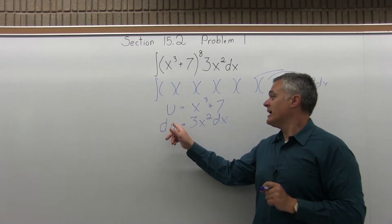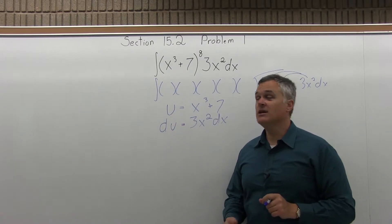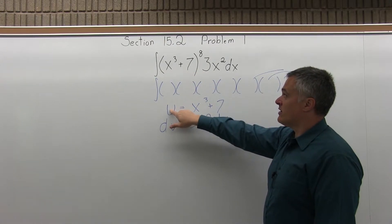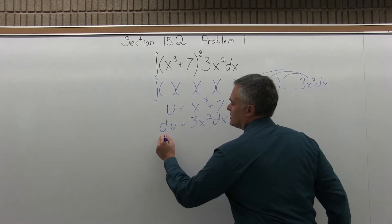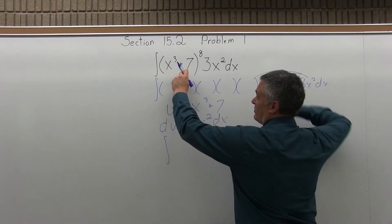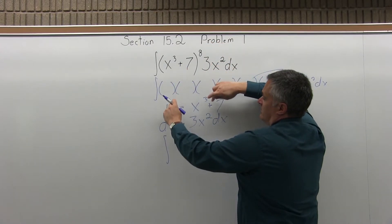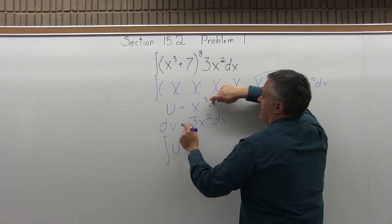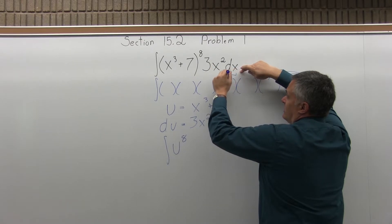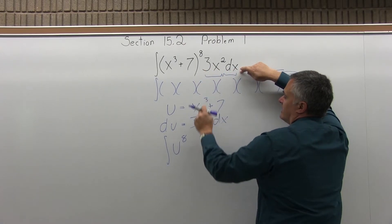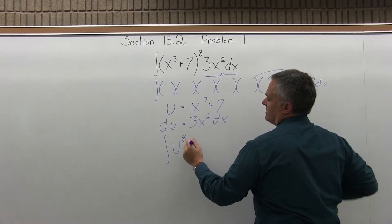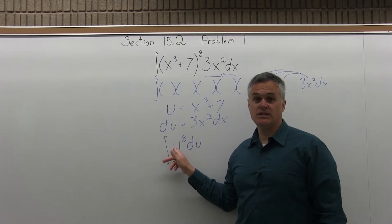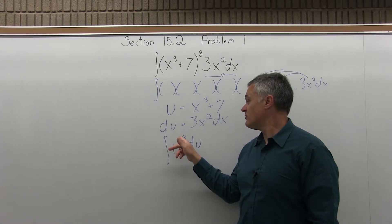So now we have u, we have du. Step three is rewrite the integral in terms of the new variable u. So the stuff in parentheses to the eighth power becomes u to the eighth power. And then what's left outside, the 3x squared dx is exactly equal to du. So in terms of our new variable u, this is a very easy integral to solve. The integral of u to the eighth du.